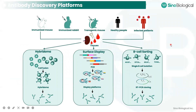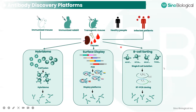After we obtain a successful immunization, we can choose different antibody discovery platforms, including the classical hybridoma process, or we can use antibody library display to obtain antibodies. And for today's talk, we are definitely focusing on the B cell sorting approach.